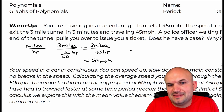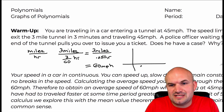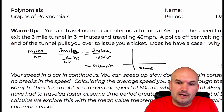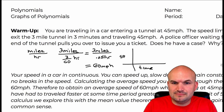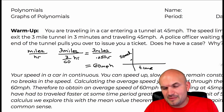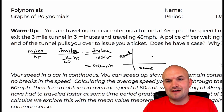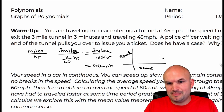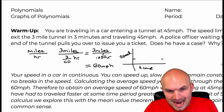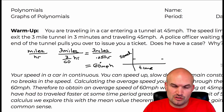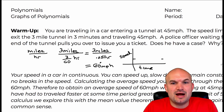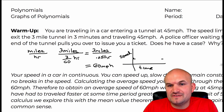Think about this on a graph with time on one axis and speed in miles per hour on the other. You're starting at 45 miles per hour and you end at 45 miles per hour. But if the average speed needed to cover that distance was 60 miles per hour, you had to go above 60 miles per hour at some point.